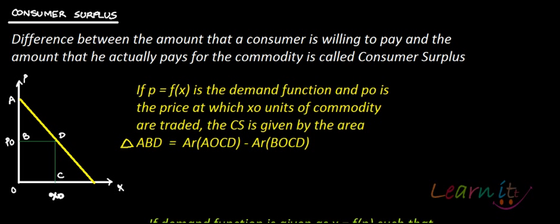How much is the first unit of the commodity worth to the consumer? Say this much. How much is the second unit worth? This much. The third unit? This much. Fourth — this much. Fifth — this much. And at X naught — this much. This entire region A, D, X naught, O (or A, O, C, D) is basically the entire value which the consumer is going to get.